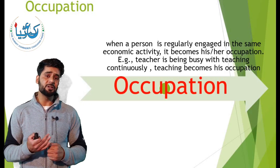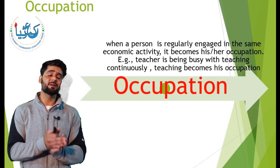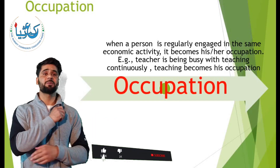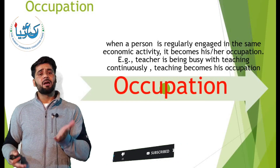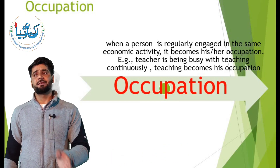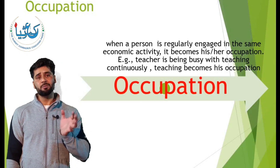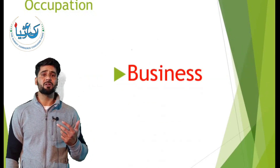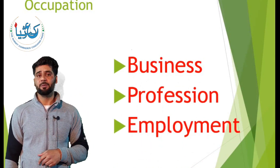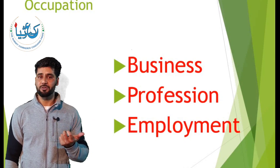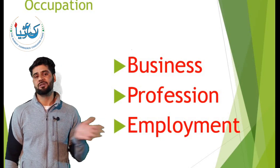For example, a teacher continues to be busy with teaching — it becomes his occupation. A businessman continues to be busy with his business — then business becomes his occupation. An employee continues to be busy with employment — so it becomes their occupation. Now, occupation is of three types: business, profession, and employment.